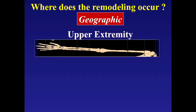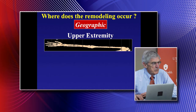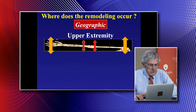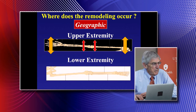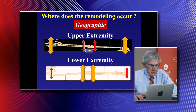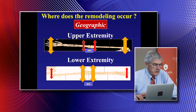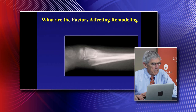About 30% of remodeling occurs around the elbow, whereas about 80% occurs around the knee. You need to understand that—you don't have a lot of remodeling capacity with fractures about the elbow. Where the remodeling occurs depends on location: upper extremity distal radius sees most remodeling, lower extremity sees it primarily at the distal femur.